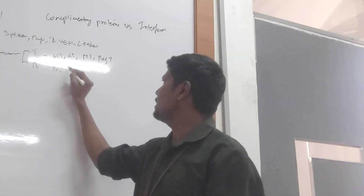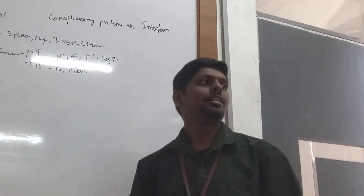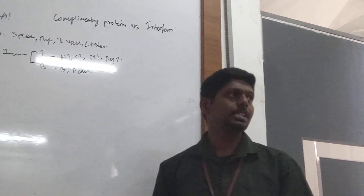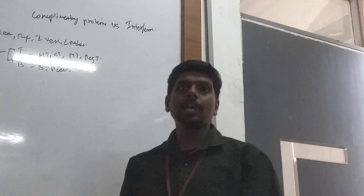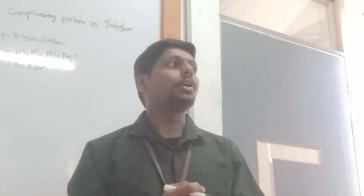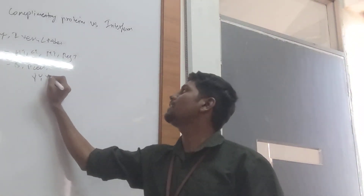Whereas B cells include B cells and plasma cells. Activated B cells are called as plasma cells. Then we have memory B cells.